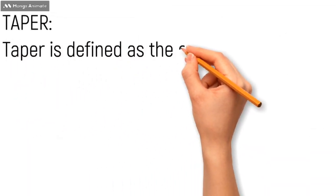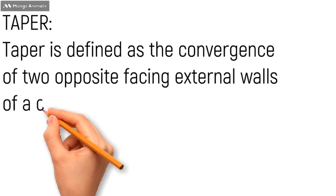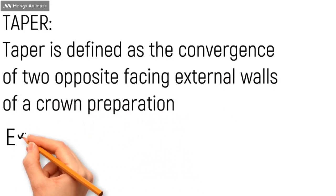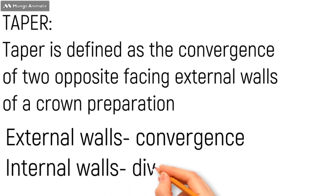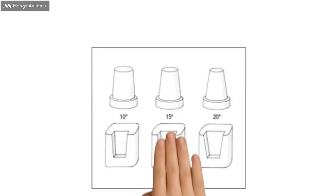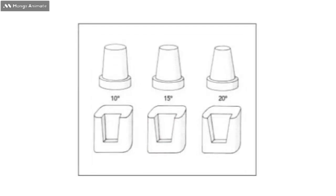Now talking about the next quality, taper. Taper is defined as the convergence of two opposite facing external walls of a crown preparation. You have to take care that if you're talking about external walls it will be convergence, and if internal walls it will be divergent. In this figure you can appreciate the divergent wall—divergent because these are the internal walls of the tooth. Here you can see tapering of 10 degrees, 15 degrees, and 20 degrees.